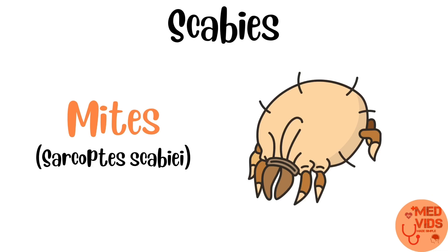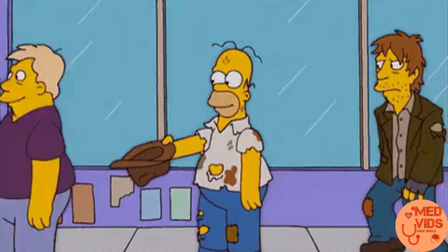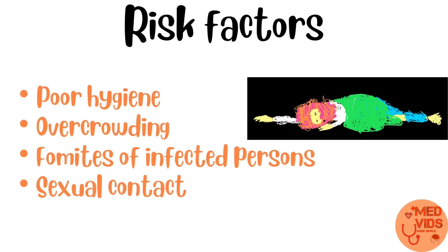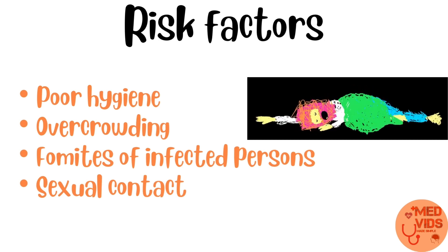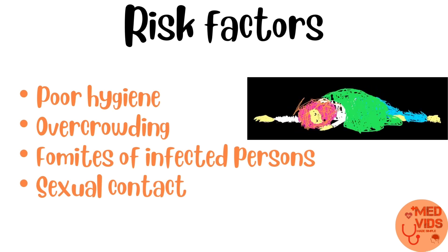Scabies is caused by mites called Sarcoptes scabiei. It is a water-wash disease, which means it occurs in areas with poor water supply and poor hygiene. Apart from poor hygiene, overcrowding, contact with fomites such as towels and bed sheets of infected people, and sexual transmission from someone with untreated scabies can also lead to scabies.